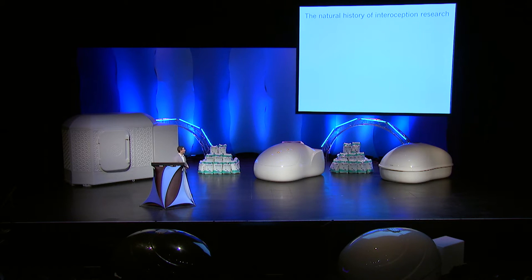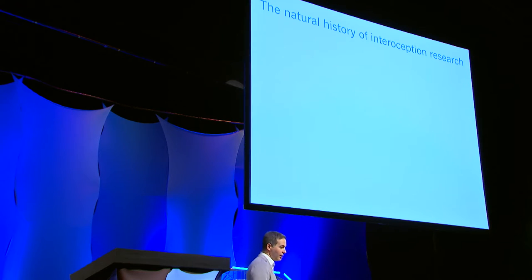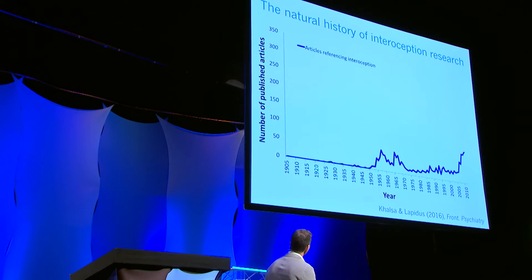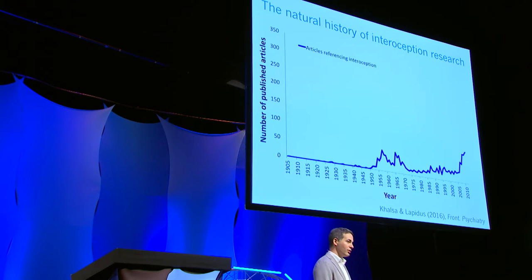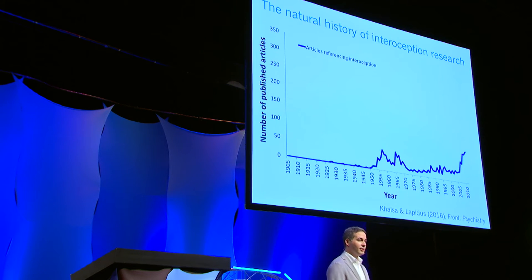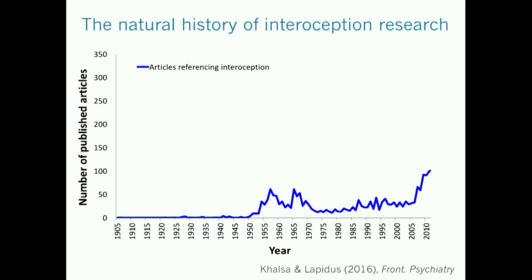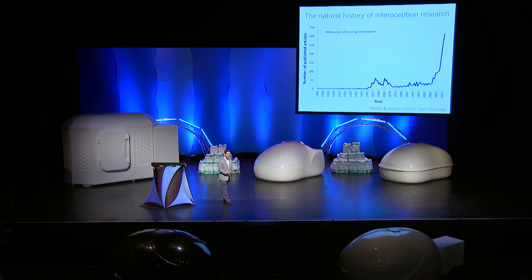Last year I provided some preliminary results in terms of a natural history of interoception research. My graduate student Rachel Lapidus and I surveyed the entire literature going back to 1905, when this term was originally coined by Nobel laureate Charles Sherrington. We found a lull for about 50 years after it was coined, a spike in the 50s and 60s, a slow increase, and then in the last 10 years a significant rise. We've now updated this to reflect publications in the last two years, and interest from the scientific community is clearly increasing.